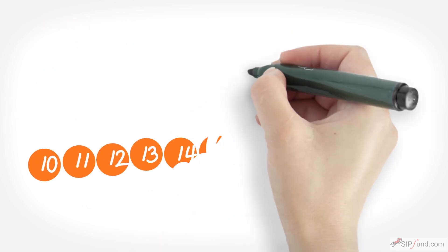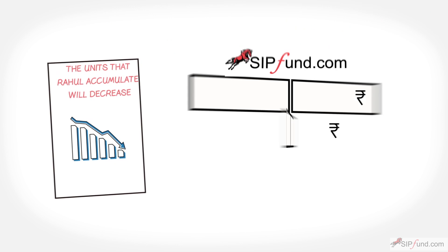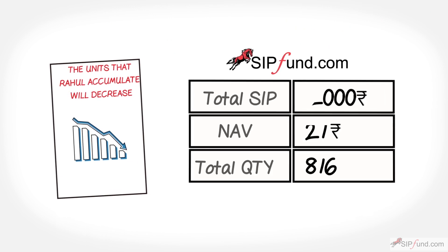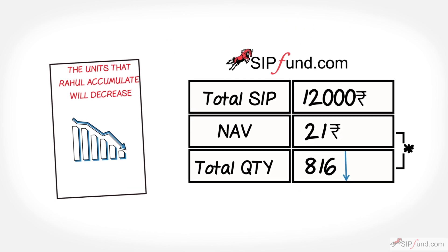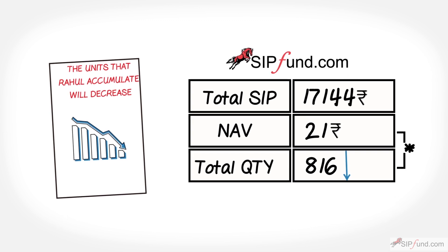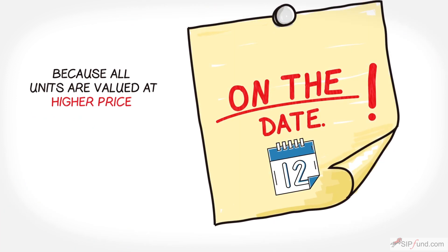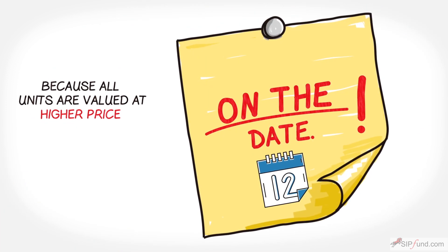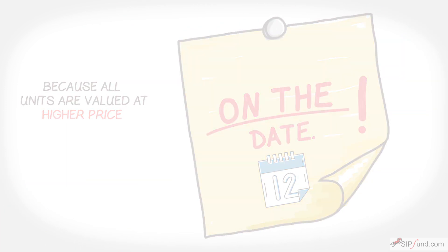Assuming the prices keep going up, the SIP units that Rahul accumulates will decrease, and the value of his rupees 12,000 will become rupees 17,144, because all units are valued at the higher price on that date.